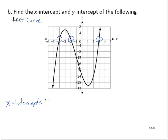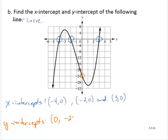The x-intercepts are negative 4, 0, negative 2, 0, and 3, 0. Does the curve have any y-intercepts? Well, we do see one y-intercept at 0, negative 24.